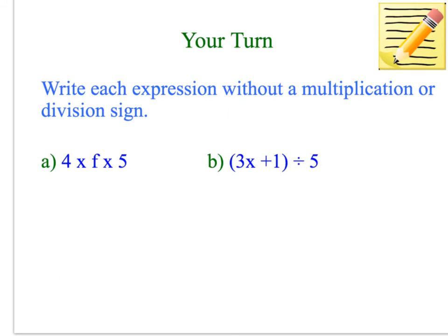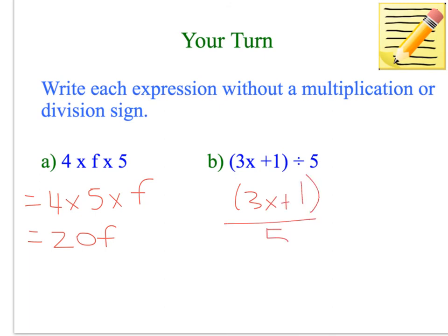Now it's your turn. See if you can write each of these expressions without a multiplication or division sign. For the first one, we rewrite with the number first then the variable: 4 times 5 is 20, so the answer is 20F. For the second one, we just rewrite it without using the division sign, so it becomes (3X + 1) over 5 as a fraction. That's all you need to do for that one.